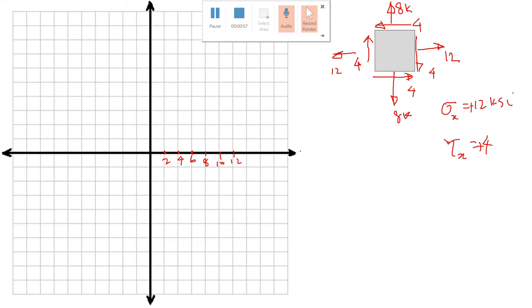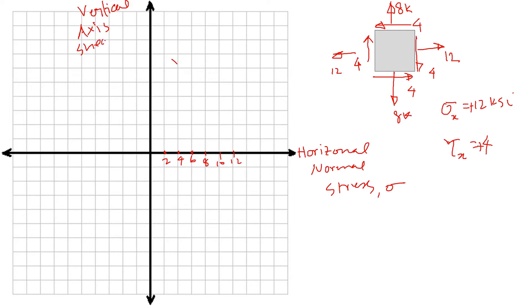On the x-axis—I shouldn't say x-axis. On the horizontal axis (x-axis is a different thing in Mohr's circle), on the horizontal axis we have the normal stress. On the y-axis—again I'm wrong, should be vertical axis. X-axis is a different thing in Mohr's circle. So on the vertical axis we have the shear stress.